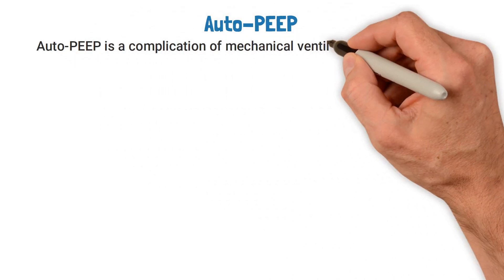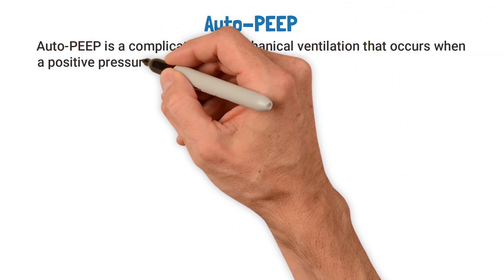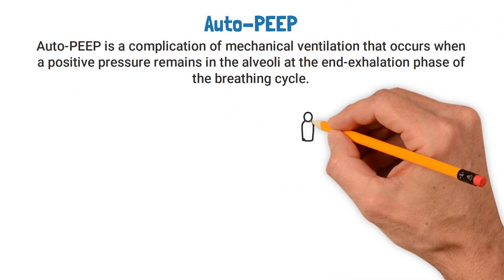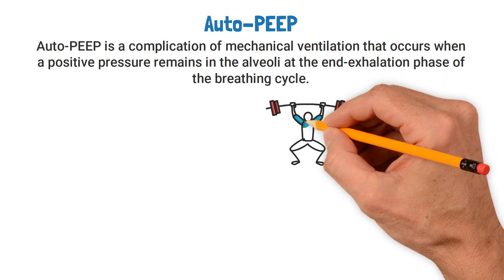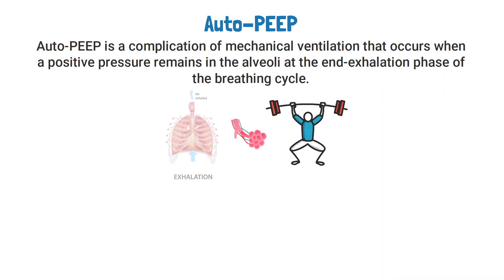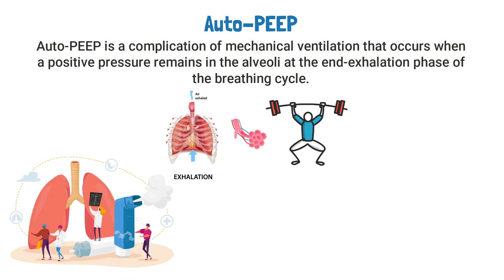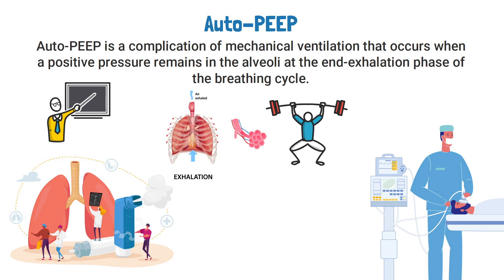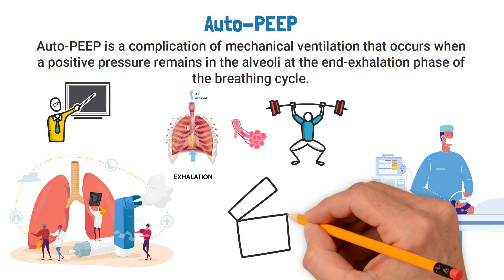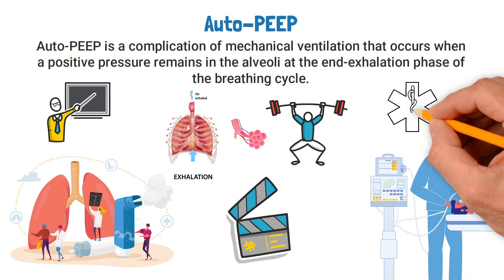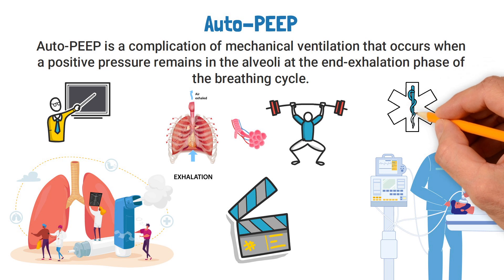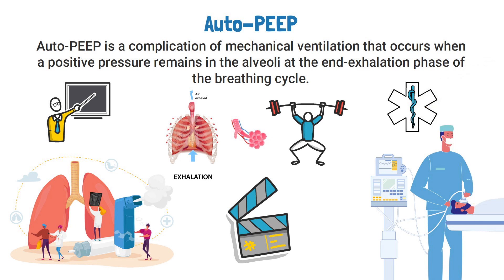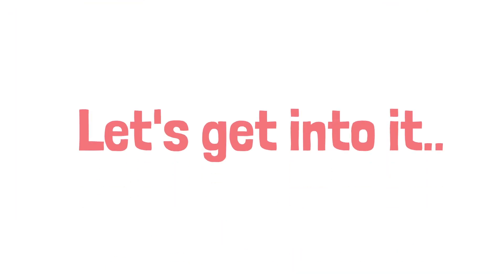Auto-PEEP is a complication of mechanical ventilation that occurs when positive pressure remains in the alveoli at the end of the exhalation phase of the breathing cycle. As a respiratory therapist who works with mechanical ventilators, this is a topic you must be familiar with. We created this quick video to cover the medical definition and provide a brief overview of this topic, so if you're ready, let's get into it.